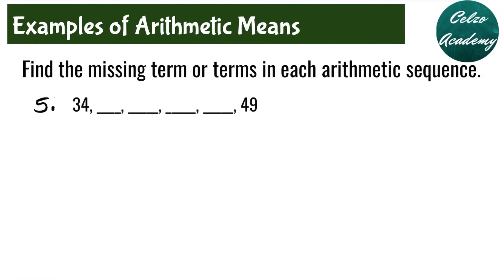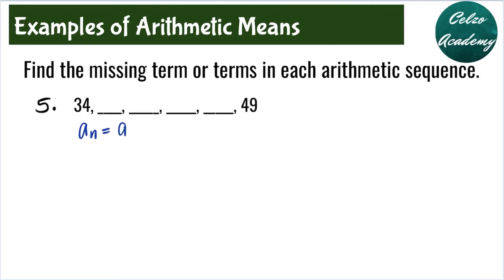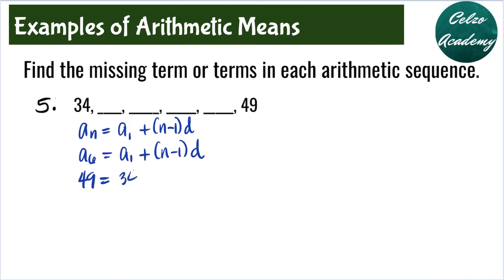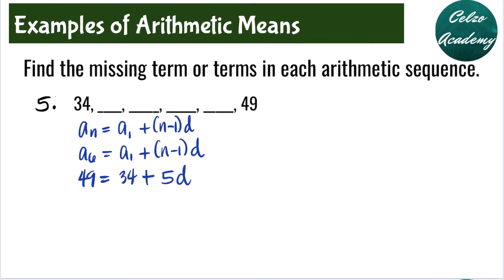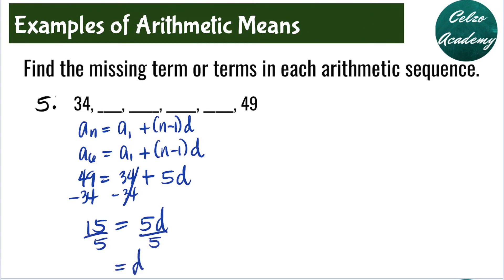Question number 5: find the four missing terms in this arithmetic sequence. Using the formula a sub n equals a sub 1 plus n minus 1 times d, we have 6 terms in total. A sub 6 is 49, and a sub 1 is 34. So 49 equals 34 plus 5d. Subtracting 34 from both sides gives 15 equals 5d. Dividing both sides by 5, d equals 3.